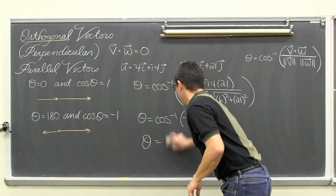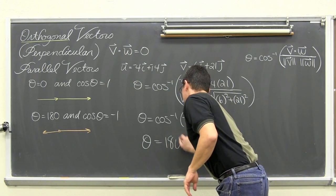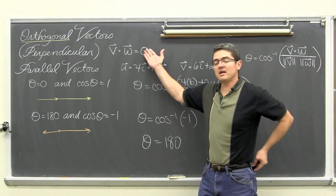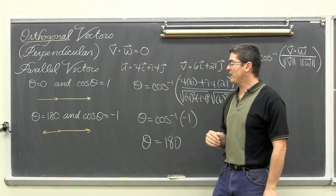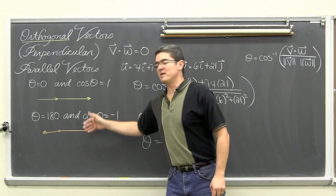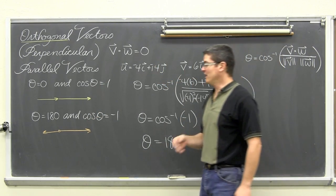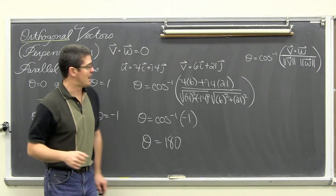So, that is just a last little step there for your special cases of when your vectors are either perpendicular with a dot product of zero or parallel. And there are two cases of being parallel. You might want to be able to remember or note which it is. Are they going in the same direction or are they going in the opposite direction?